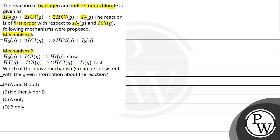Which of the above mechanism can be consistent with the given information about the reaction? Option A: A and B both. Option B: neither A nor B. Option C: A only. Option D: B only.